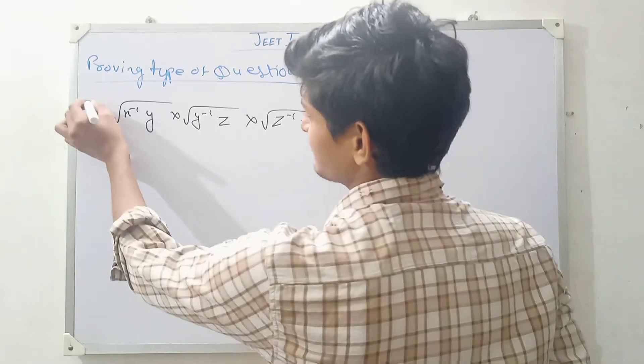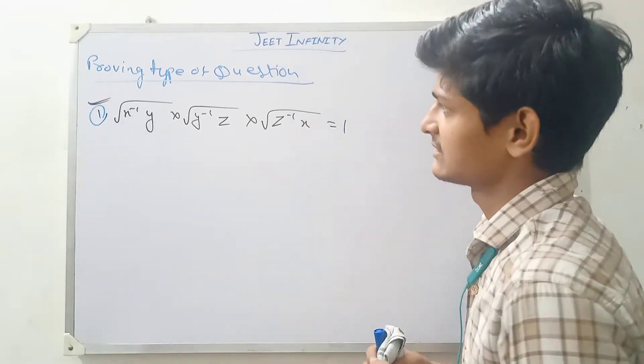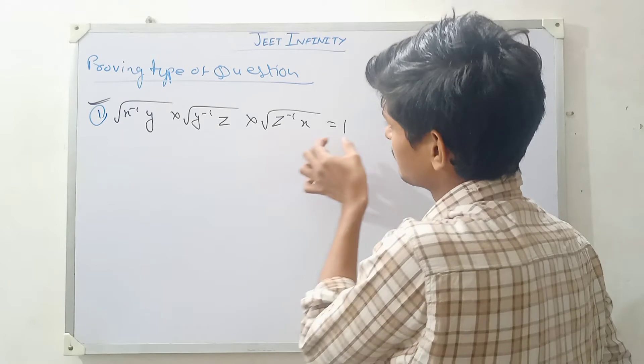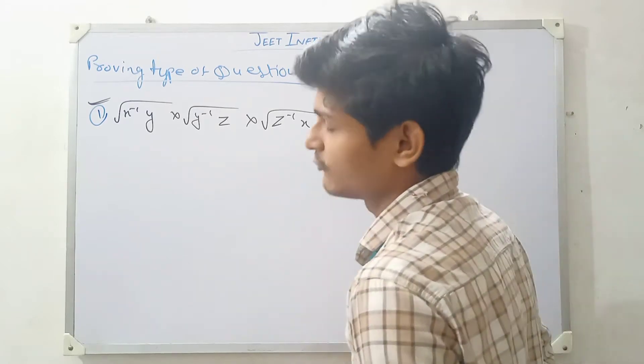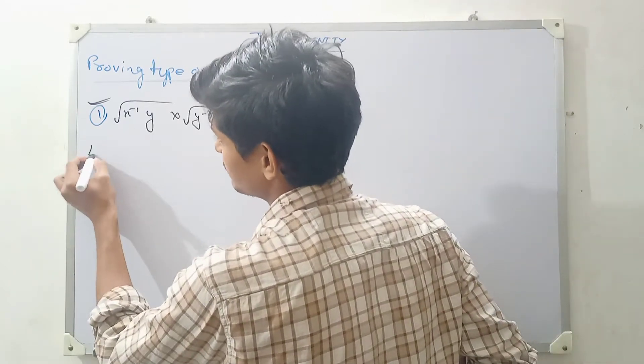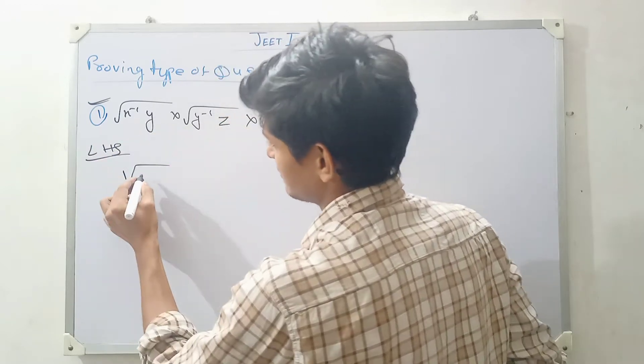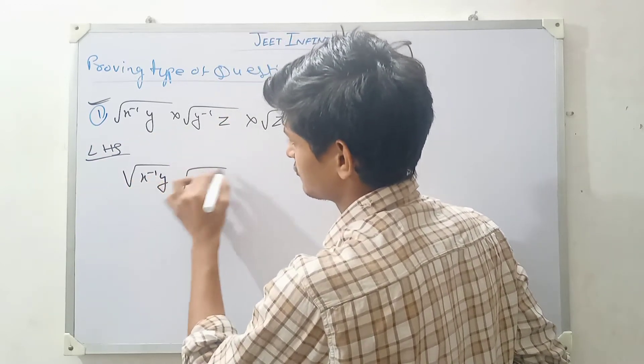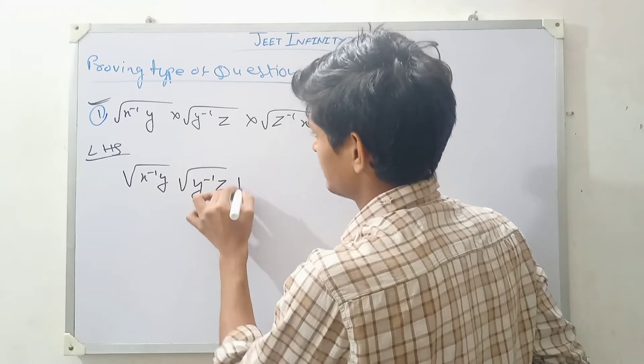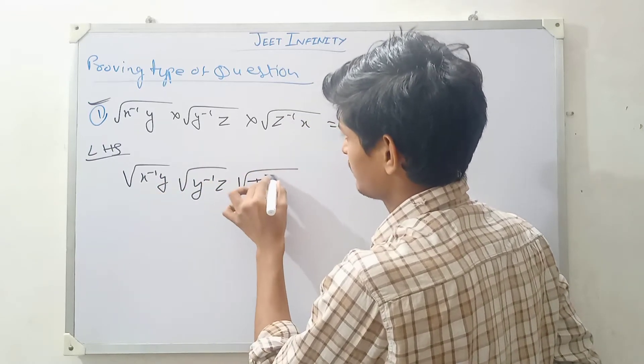In these types of questions, we are going to discuss first of all, this quantity is proved equal to 1. Then how we can prove this? First of all, you write here LHS and here put it here left hand side. X inverse of Y root over Y inverse of Z root over Z inverse of X.